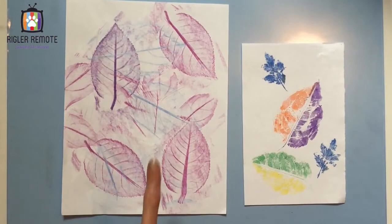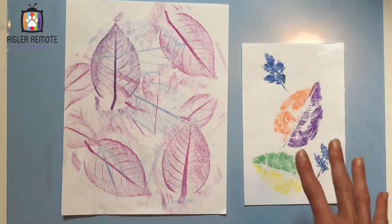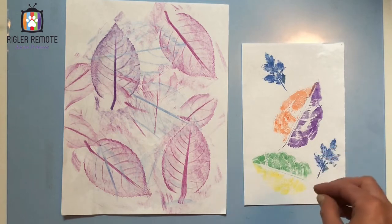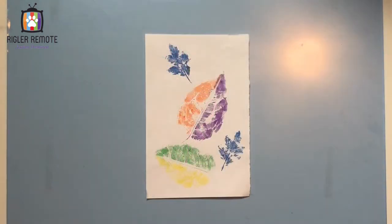This one is the leaf rubbing with crayon and this work is the leaf print with marker. So first I'm going to show you the one with the marker. Let's do our leaf print with markers. First I'm going to need paper, markers, and leaves.